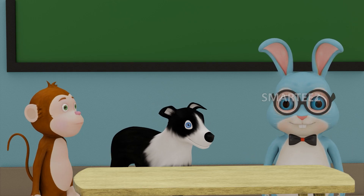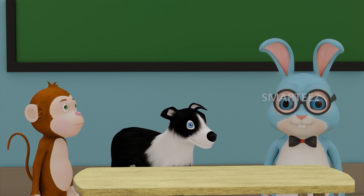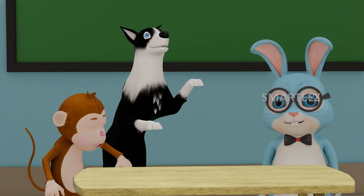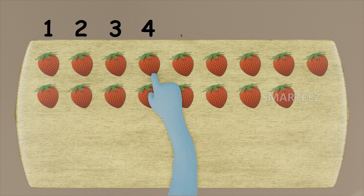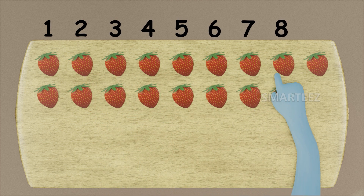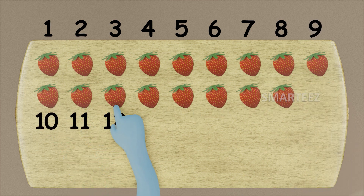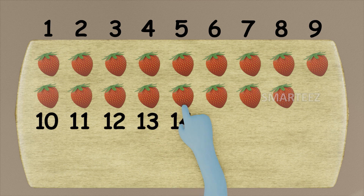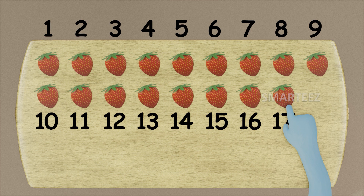Let's do one last one. This time I'm going to split my favorite yummy fruit, strawberry, between Byra and Rangu. Let's see how many strawberries we have here on the table. That's one, two, three, four, five, six, seven, eight, nine, ten, eleven, twelve, thirteen, fourteen, fifteen, sixteen, and seventeen. We have a total of seventeen strawberries.